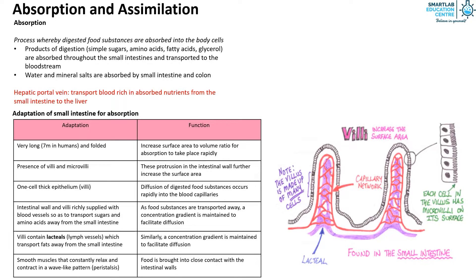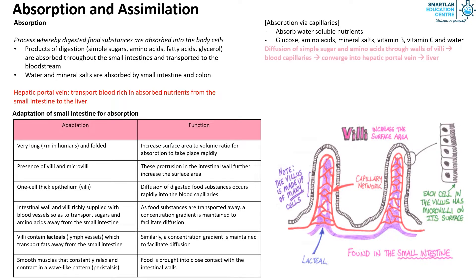At the capillaries, there is absorption of water-soluble nutrients such as glucose, amino acids, mineral salts, vitamin B, vitamin C, and water. The simple sugars and amino acids diffuse through the walls of the villi into the blood capillaries. These capillaries converge into the hepatic portal vein, which then brings these nutrients to the liver.